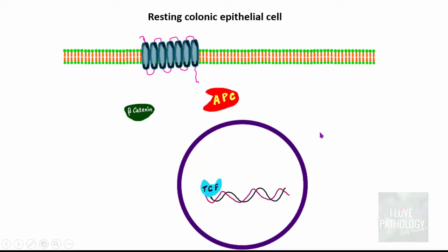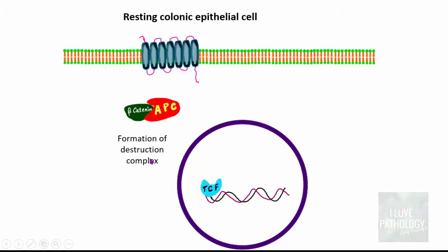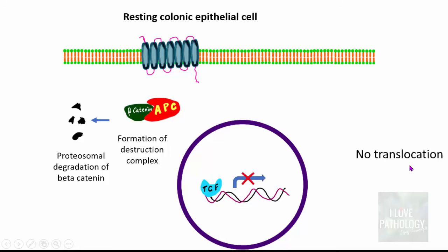In a resting cell where there is no proliferation, APC and beta-catenin combine together to form a destruction complex, where beta-catenin molecules are broken down by proteosomal degradation. APC protein is responsible for the breakdown of these beta-catenin molecules. Because beta-catenin is broken down, no more beta-catenin is available, so there is no translocation into the nucleus, no transcription, and no proliferation. That's why resting colonic epithelial cells do not proliferate — because of the destruction complex formed with the help of APC protein.